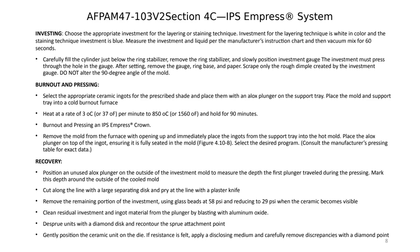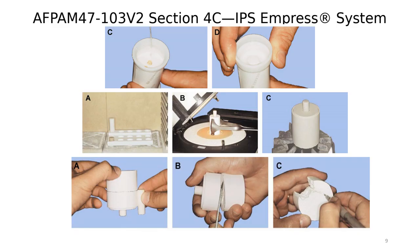Once the investment is done and the ring is placed in the burnout oven, the manufacturer typically recommends a heat soak of 40 minutes to an hour, depending on the investment type. Regular investment may require a slightly longer soak time, while speed investment may require a shorter heat soak time.